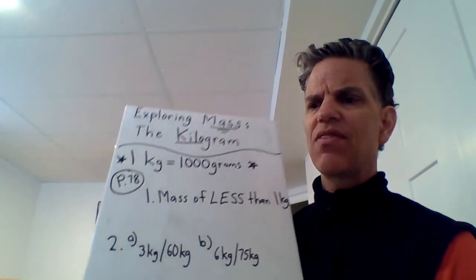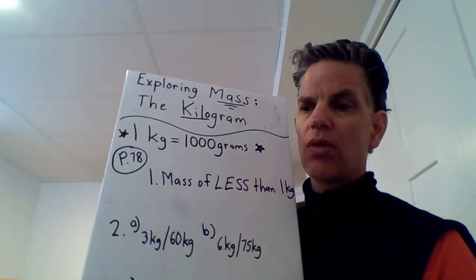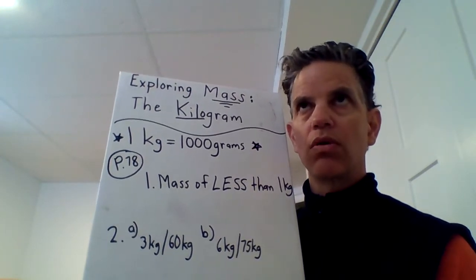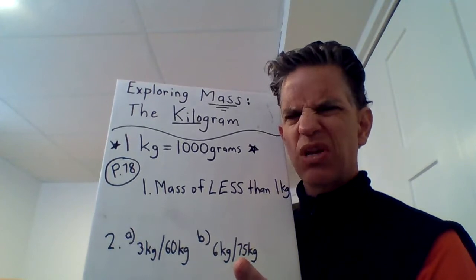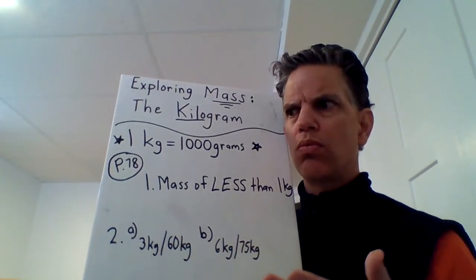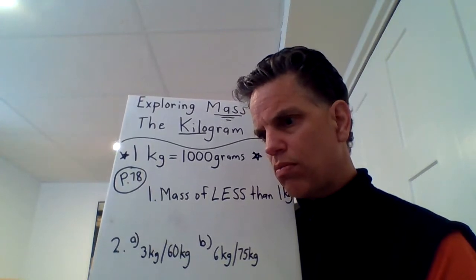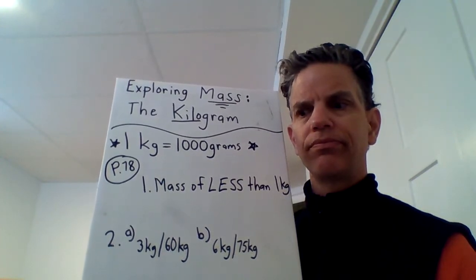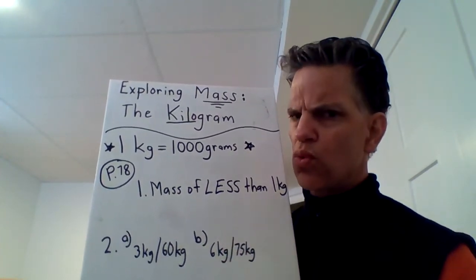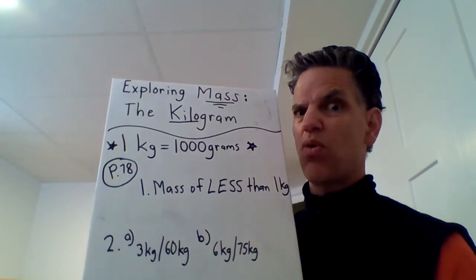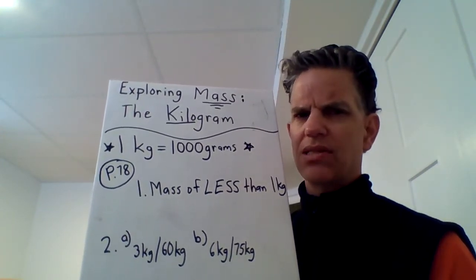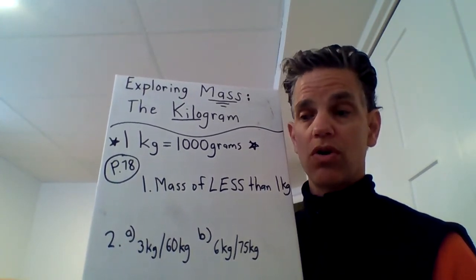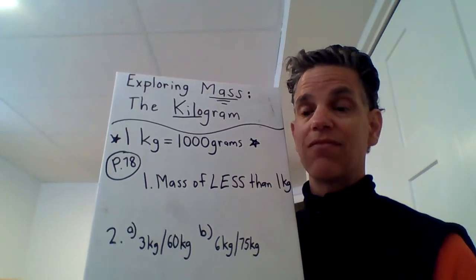So think of something that's less than a bag of flour. Circle the objects that have less than one kilogram. A balloon. A dog. A calculator. Apples, a bag of apples. I think that's going to be more. An eraser. Oh that's not as much as a whole bag of flour. And a computer monitor.